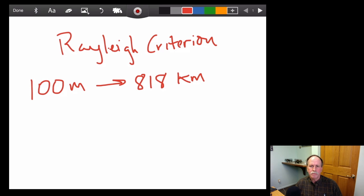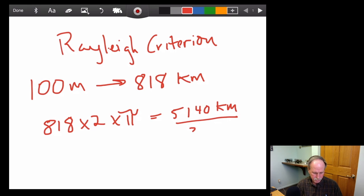One of the quick and easy ways that we can do this is figure out how many arc seconds does this represent. So 818 kilometers times 2 is the diameter times pi will give us the circumference of a circle that big. So let's go ahead and do that math real quick. 818 times 2 times pi gives us a circle that's roughly 5,140 kilometers around. Divide that by 360 is 14.27 kilometers.